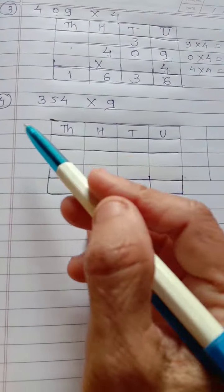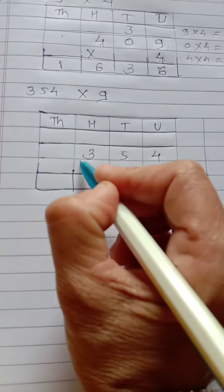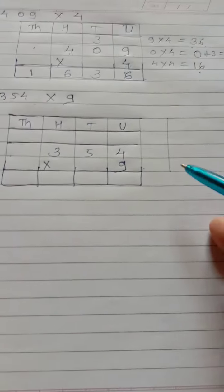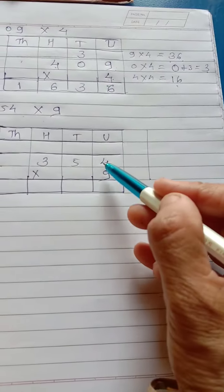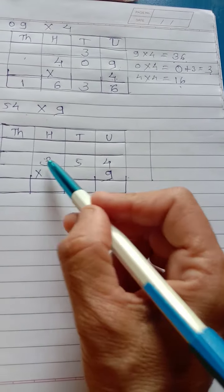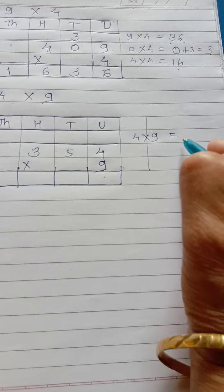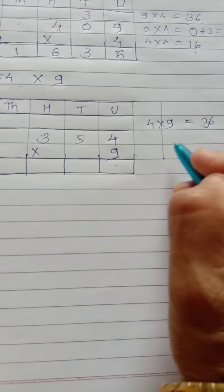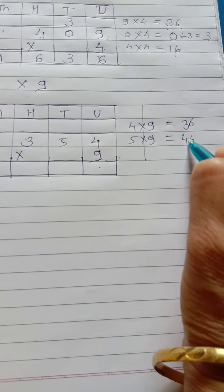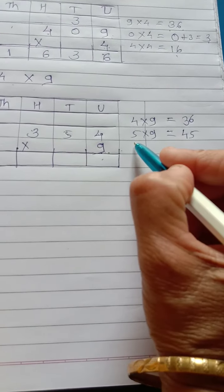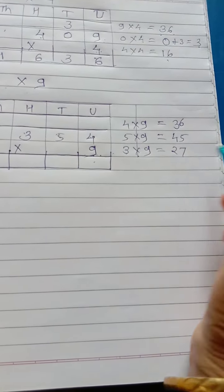Now, third one. Sorry, fourth one. 3, 54 multiply 9. 3, 54, multiply by 9. You must make column like this. And, you write this one here. It will be easy for you to solve these sums. Now, 4 multiply by 9. 5 multiply by 9. And, 3 multiply by 9. First, unit place. 4 multiply by 9. That is 36. Second, 5 multiply by 9. That is 45. And, 3 multiply by 9. That is 27.